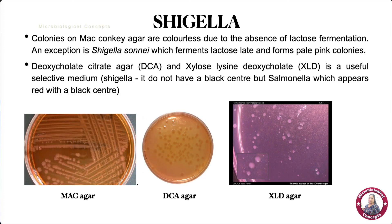For identification of Shigella species we mainly use MacConkey agar, Salmonella-Shigella (SS) agar, Deoxycholate agar (DCA), or XLD agar. On MacConkey agar, Shigella produces colorless colonies because it cannot ferment lactose. One exception is Shigella sonnei, which ferments lactose late, producing pale pink colonies. Here you can see the growth of Shigella colonies on MacConkey agar.